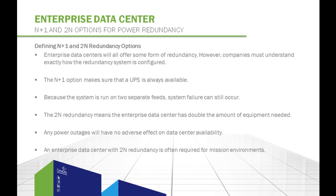Using an enterprise data center with 2N redundancy is often required for mission-critical environments. This type of capability is consistent with a Tier 4 data center, a facility meeting the strictest operation requirements. A Tier 4 facility installs two independent power paths, each capable of supporting the entire data center with no single point of failure to disrupt any operations.